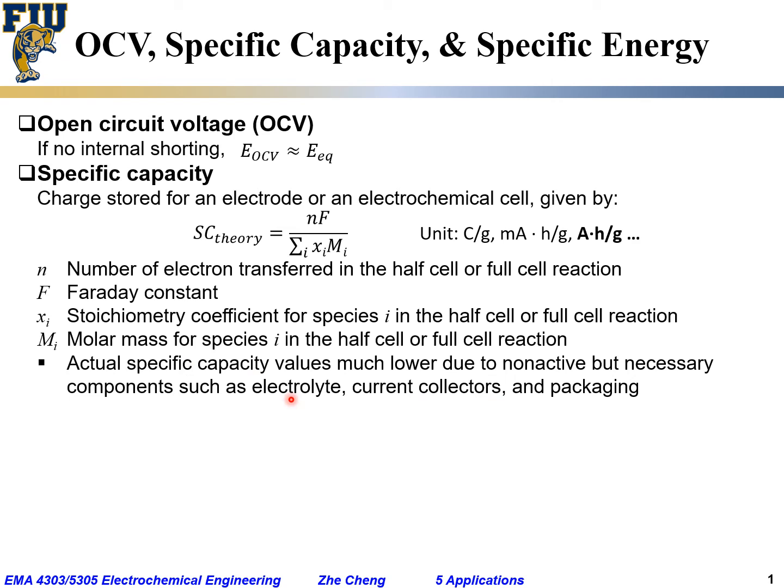So current collector, electrolytes, especially supporting species as well as packaging, you need to put the battery inside a protective casing. And all those contribute mass, but not really to capacity. So as a result, the actual specific capacity is much lower than theoretical one due to all those actual components. But over time, smarter engineering managed to gradually improve the specific capacity without changing big in chemistry.